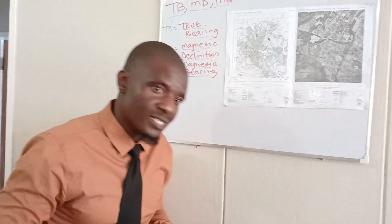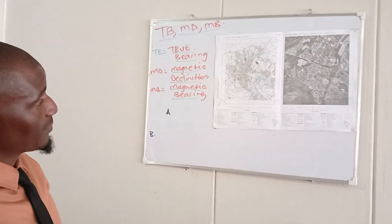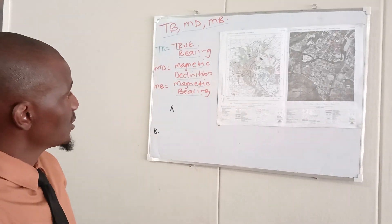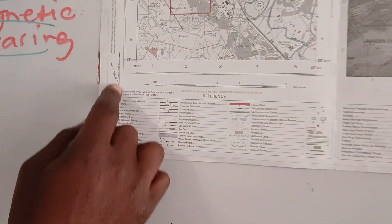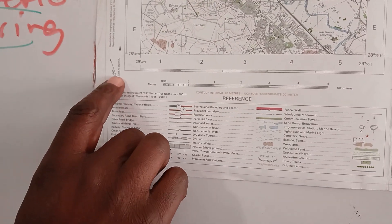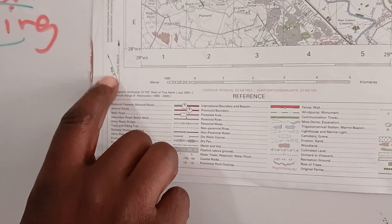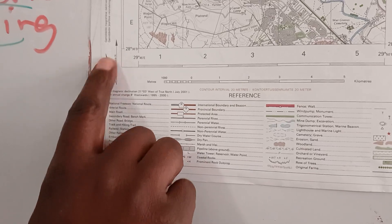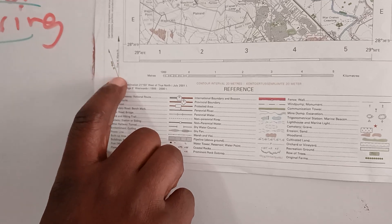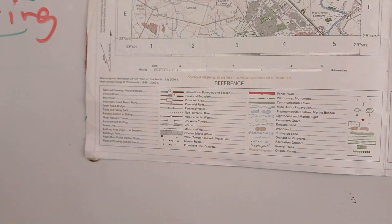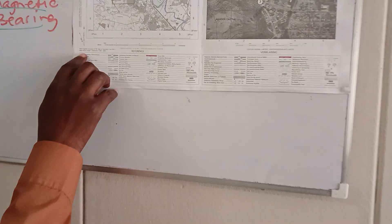I'm going to try to simplify them so that it's easier for you to understand. We have information on the map that will help you do the calculations. This shows your direction — this is your true north. The difference between your true north and your magnetic north is how we calculate our magnetic declination. That's how we calculate our magnetic declination over a certain period of time, and the information for magnetic declination is shown on the map.